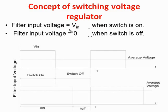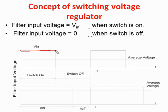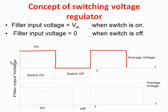Consider the input voltage Vin. When the switch is on, the input voltage Vin appears at the output side. When the switch is off, the output voltage is zero. So at the output side we get a pulsating DC voltage. When the switch is on, we get voltage at the output equal to Vin; when the switch is off, the output is zero. If we calculate the average value of this waveform, the load is driven by this average value.